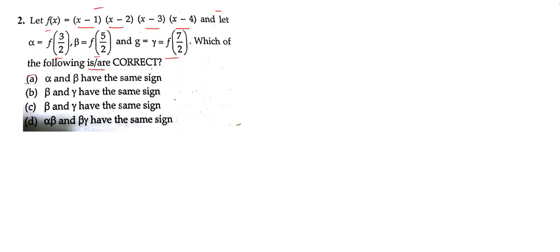We need to find which of the options are correct — either one option or more than one option can be correct. We need to determine whether these functions have equal or same sign or not. Let us find the signs of each one of them.